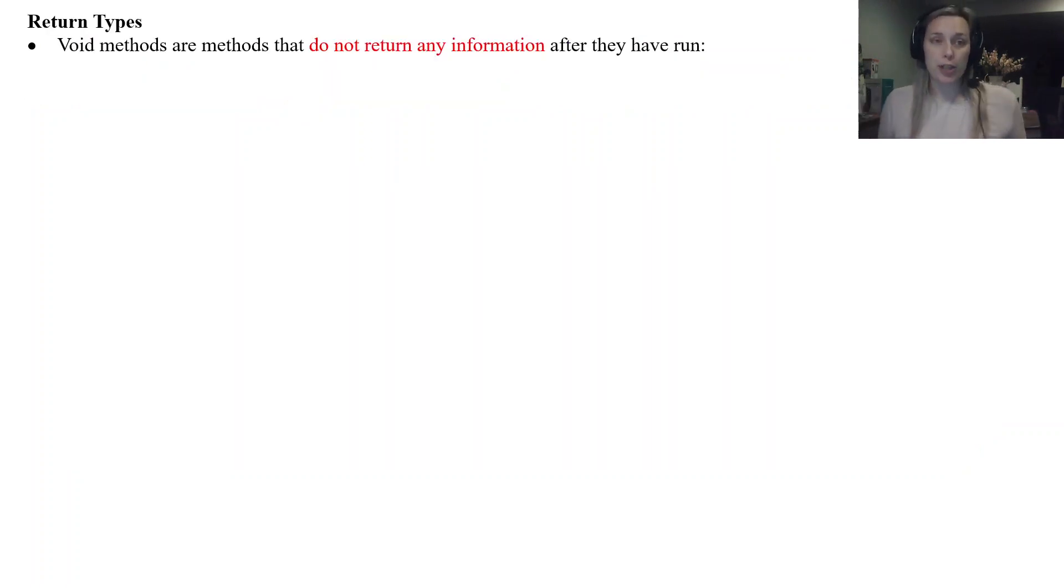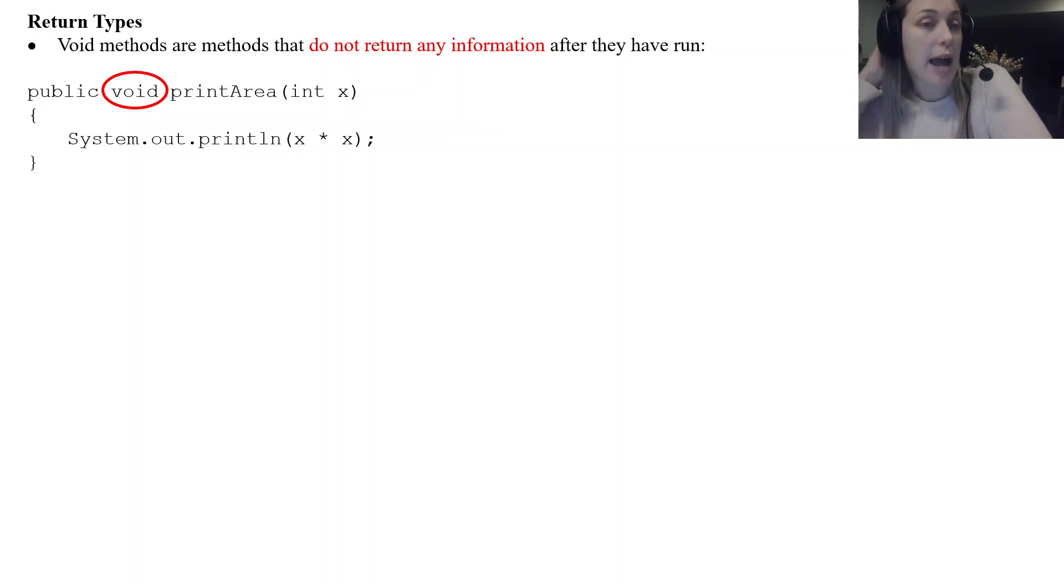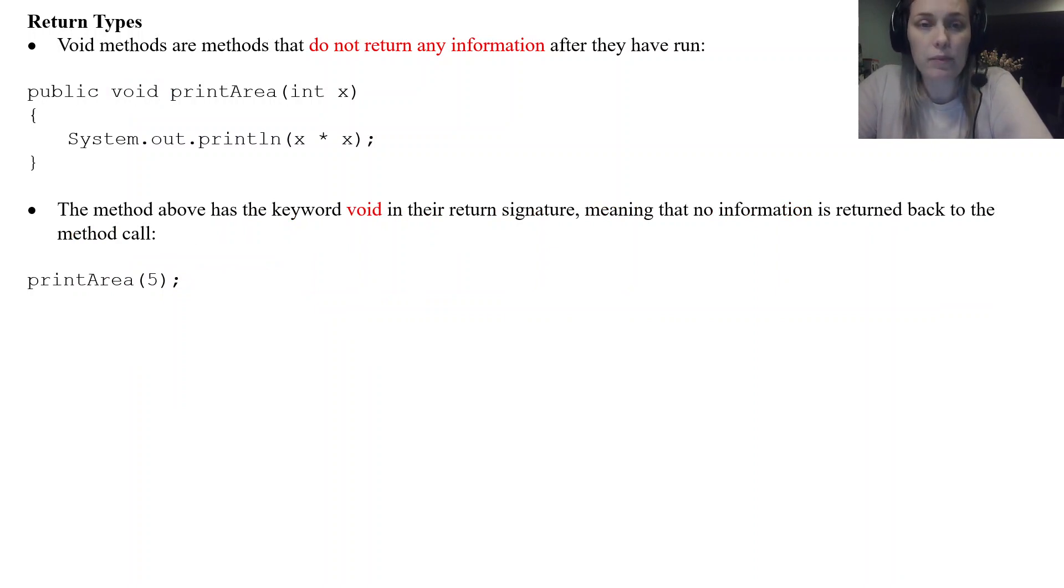Okay so let's talk about return types. So we've only gone over void methods so far which are methods that do not return any information after they have run. So an example we just did was public void print area. So this accepted a parameter X and it just printed off X times X. It did not actually return any information which is why it was a void and it had that keyword void.